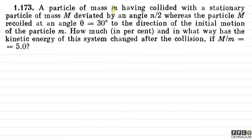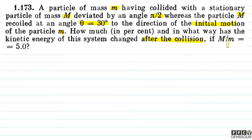The question says: a particle of mass small m, having collided with a stationary particle of mass capital M, deviated by an angle pi by 2, whereas the particle capital M recoiled at an angle theta equal to 30 degrees to the direction of the initial motion of the particle. How much in percent, and in what way, has the kinetic energy of the system changed after the collision if capital M upon small m is equal to 5?